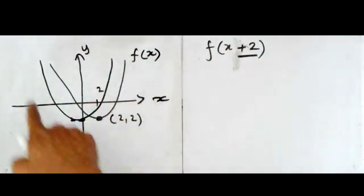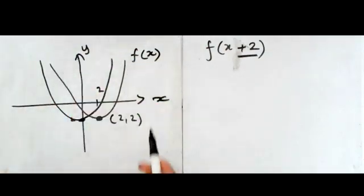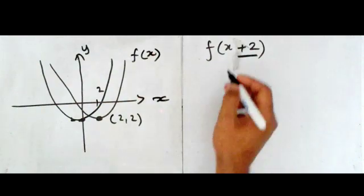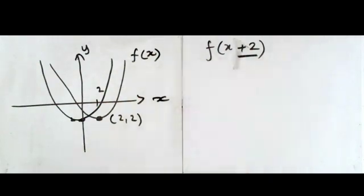Now when you draw your graph, what you're trying to do is try to make it look like the original graph, but the most important point is that point there which has been moved by minus 2 this time. So that's the first transformation.